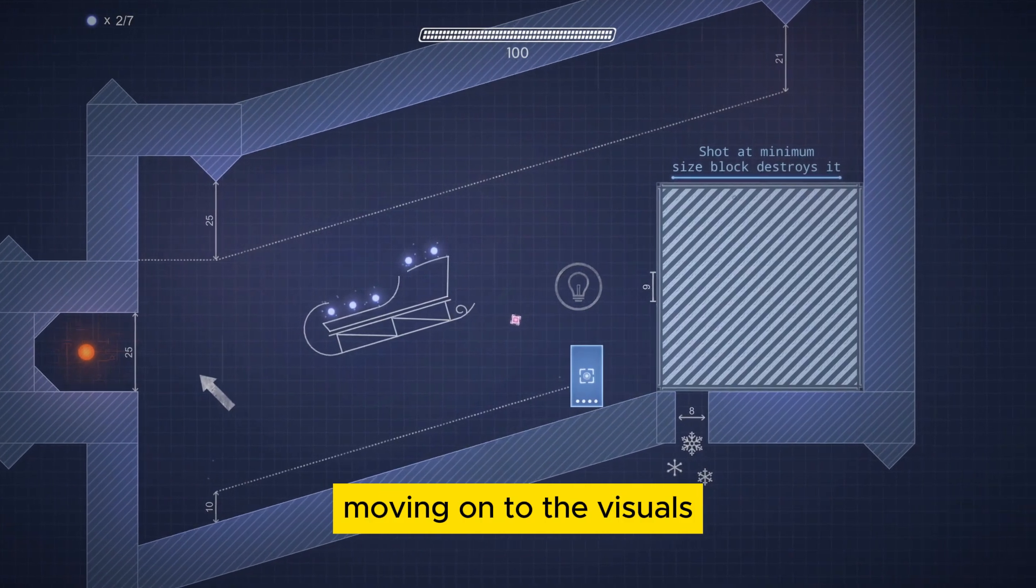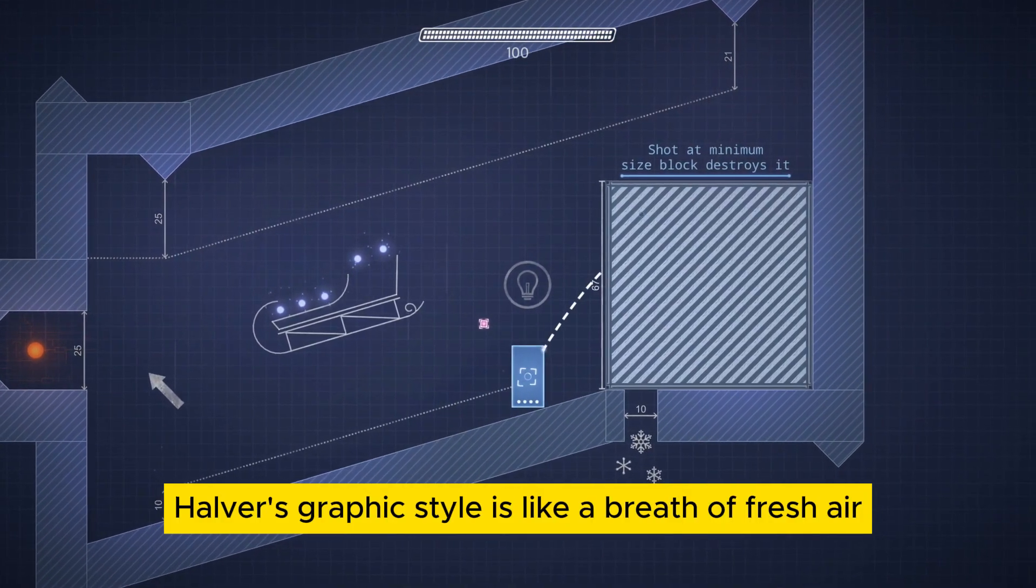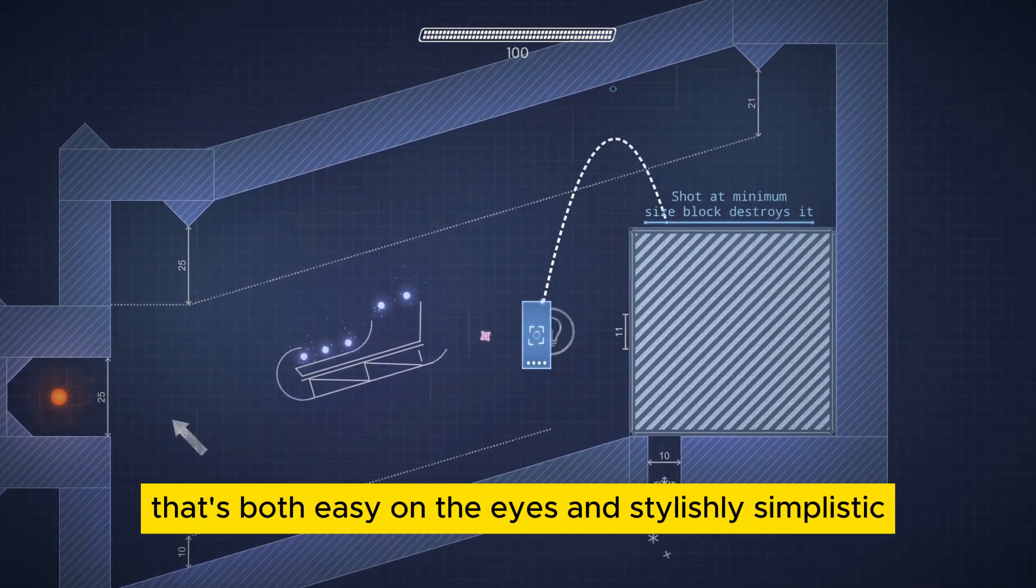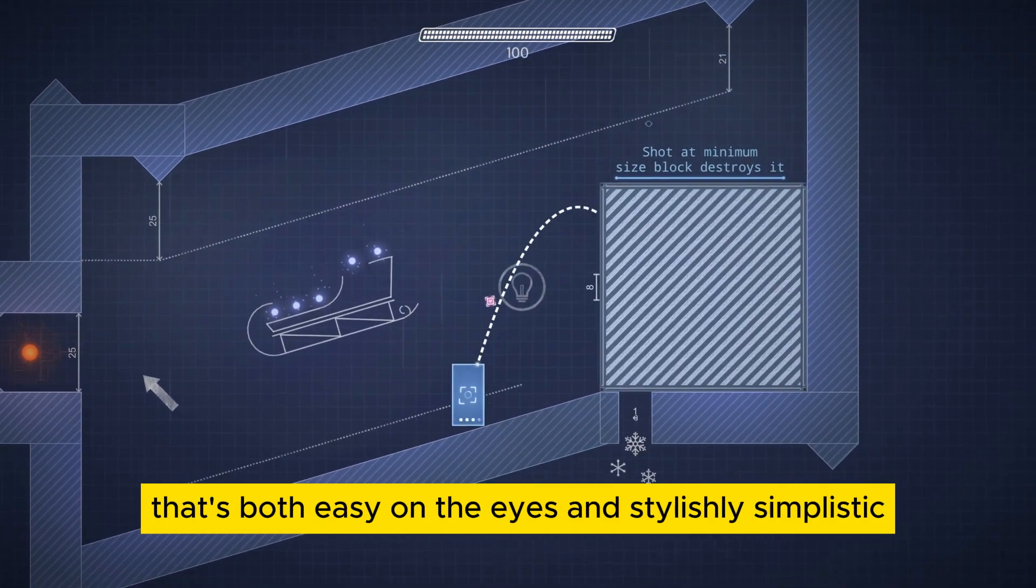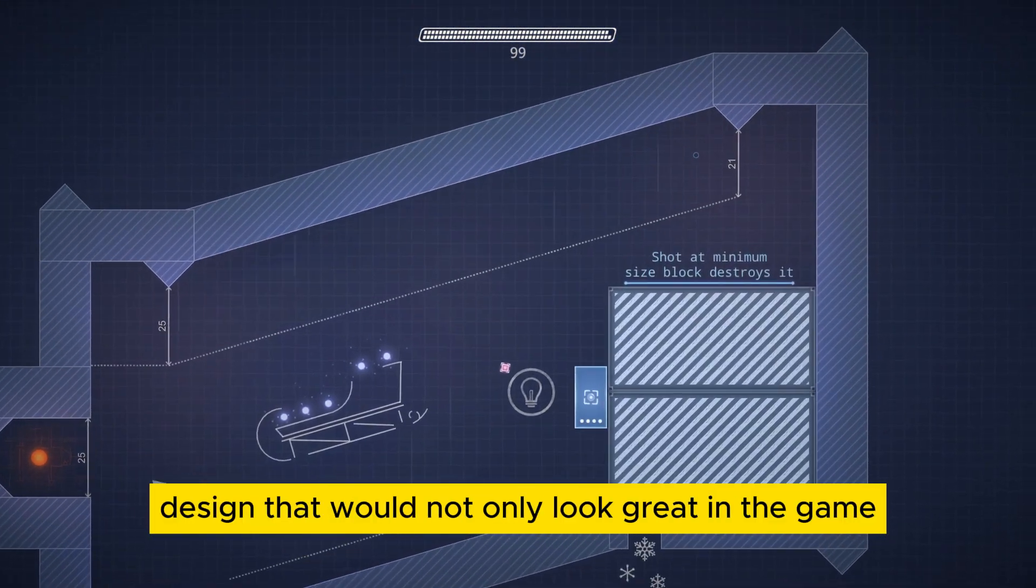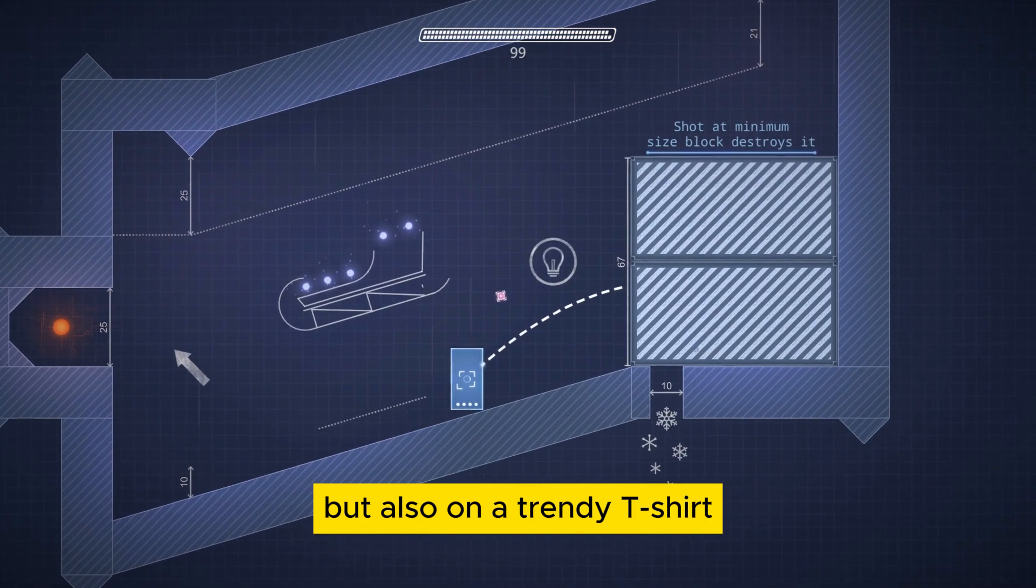Moving on to the visuals. Haver's graphic style is like a breath of fresh air. It employs a minimalist blueprint aesthetic that's both easy on the eyes and stylishly simplistic. Think of it as the kind of design that would not only look great in the game, but also on a trendy t-shirt.